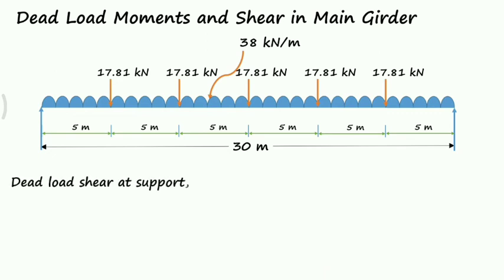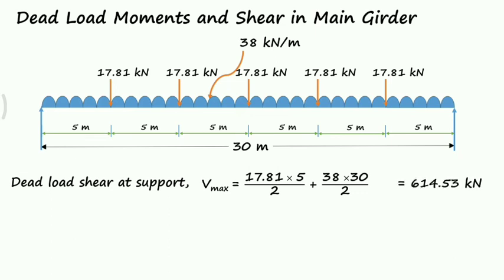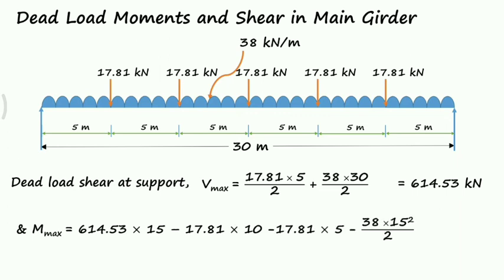The dead load shear at the support is: (17.81 × 5)/2 + (38 × 30)/2 = 614.53 kN. The maximum bending moment is: 614.53 × 15 − 17.81 × 10 − 17.81 × 5 − 38 × 15²/2 = 4675.73 kN·m.